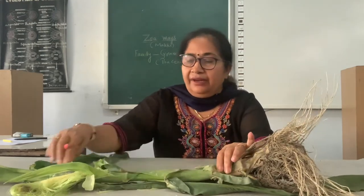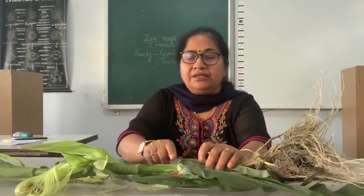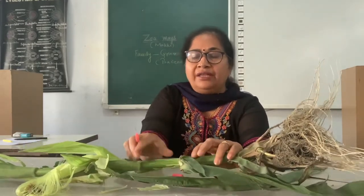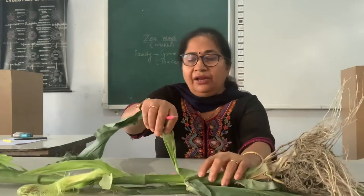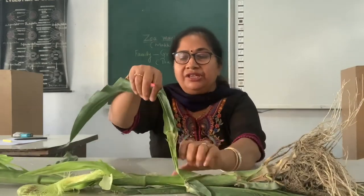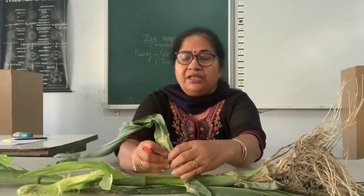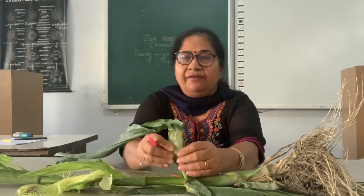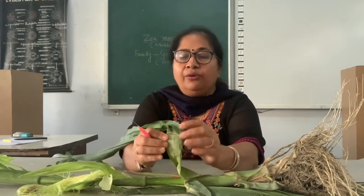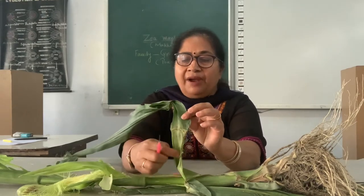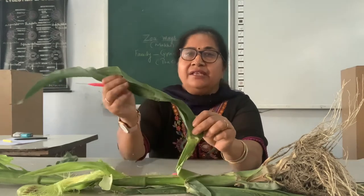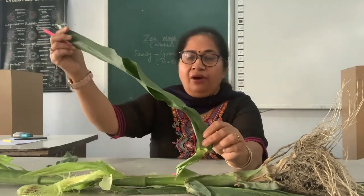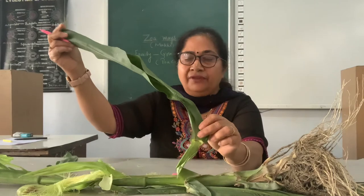Now the stem is divided into nodes and internodes. This is a node, and this is the internode part. The internode is covered by a sheathing leaf base — this is the part of the leaf which is covering the internode, called the sheathing leaf base. This part is called the leaf plate or lamina of the leaf.